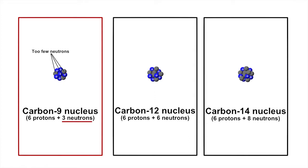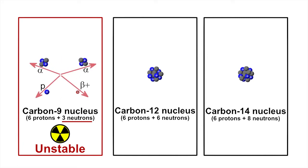Isotopes with too few neutrons have nuclei that are unstable because they lack the sticky nuclear glue necessary to counteract the repulsive electrostatic forces between the positively charged protons. These nuclei will tend to break down.